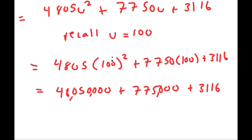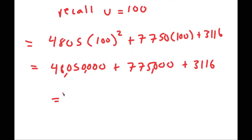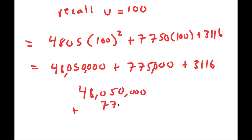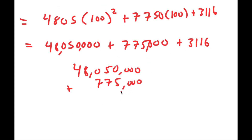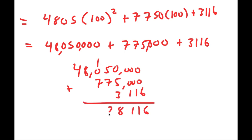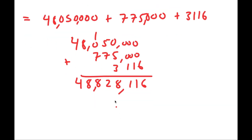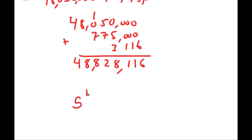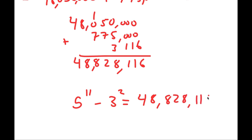And now if I add all these up — 48,050,000 plus 775,000 plus 3116 — I get my final answer. So the final answer of 5 to the power of 11 minus 3 squared is 48,828,116.